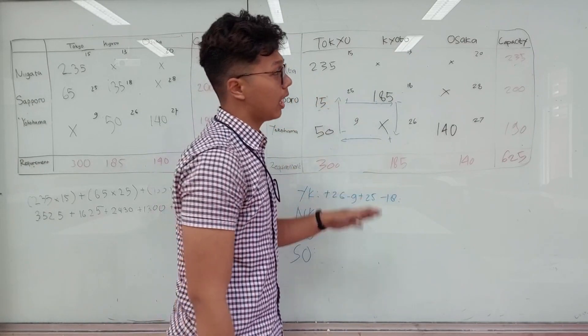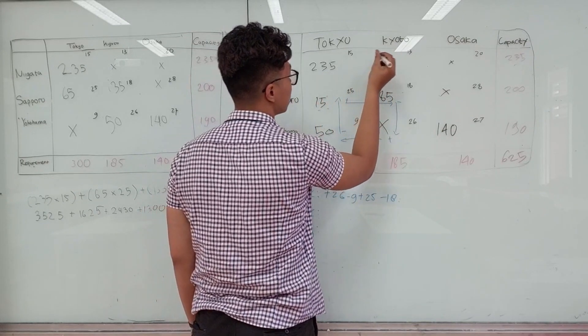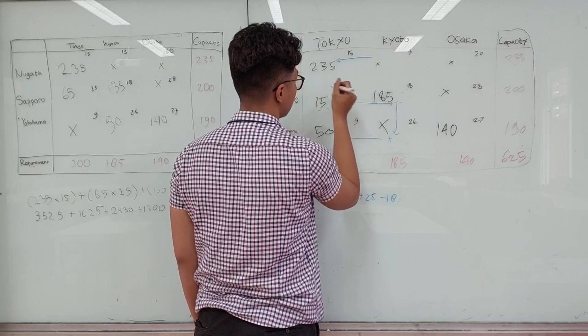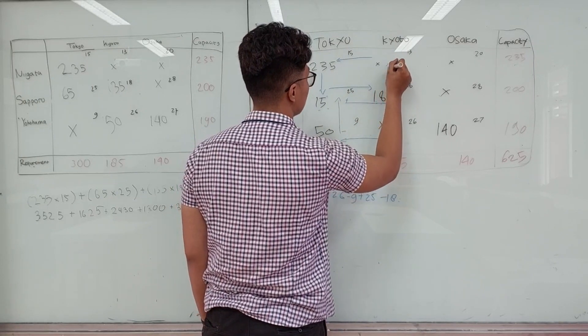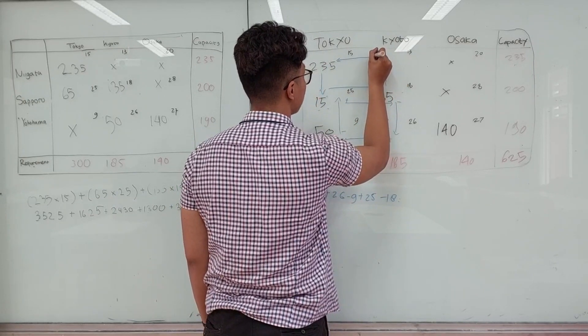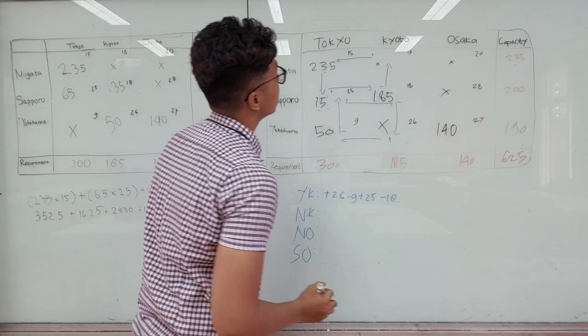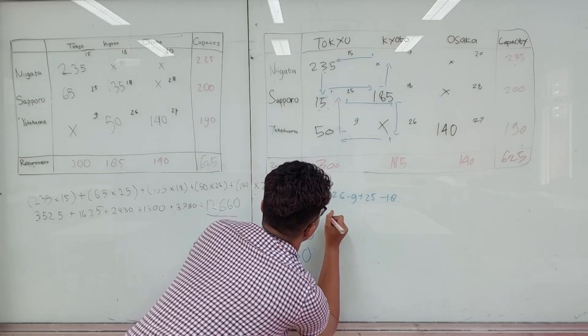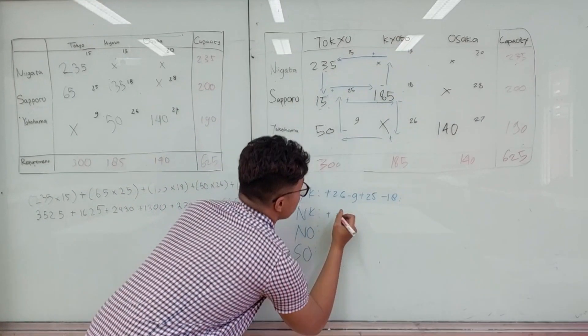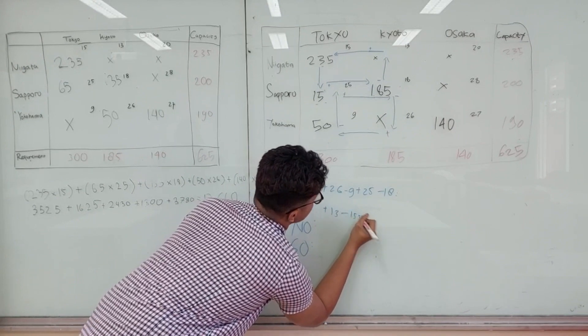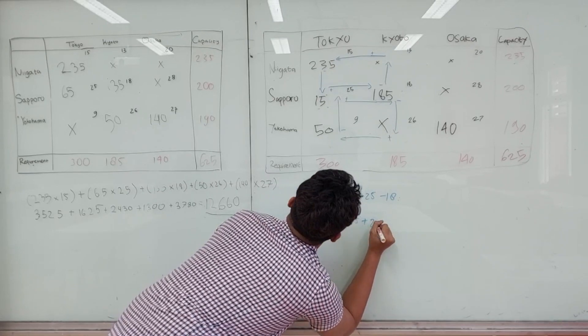Next one is the Nigara-Kyodo. We start from here to here, and the symbols are plus, minus, plus, and then minus. For Nigara-Kyodo: plus 15, plus 13, minus 15, plus 25, and minus 18.